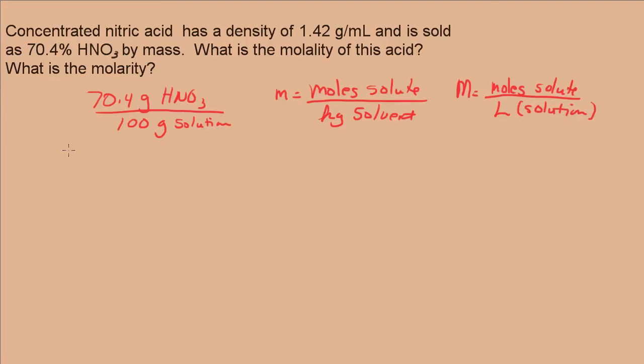Well, it will probably be easier to calculate the molality first. What we have to realize for molality, here we're being asked for the kilograms of solvent, not solution. The solution, here we're given 70.4 grams of HNO3 per 100 grams of solution. The solution includes both the HNO3 and the water.